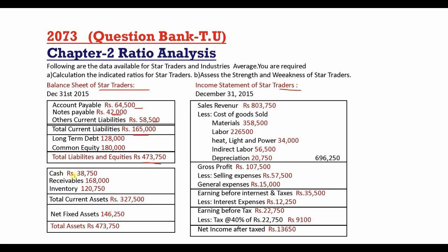Cash is $38,750. Accounts receivable $1,68,000. Inventory $1,90,000. Total current assets $3,27,500. Fixed assets $1,46,250. Total assets $4,73,750.